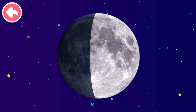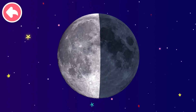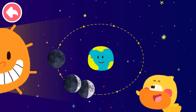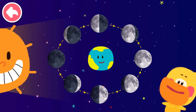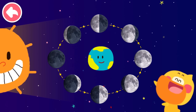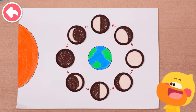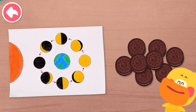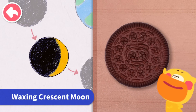Have you noticed? When you look at the moon from the earth, the shape of the moon changes every day. This is the moon phases diagram. We can record it in a fun way — a delicious and fun cookie moon phases diagram. All we need are some sandwich cookies and a piece of paper, and we're ready to go. Let's make it together.